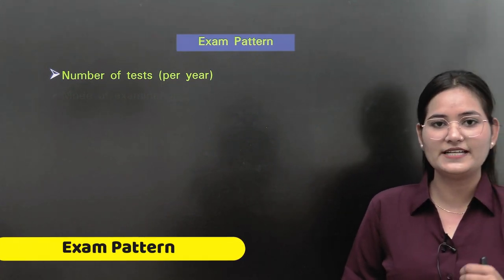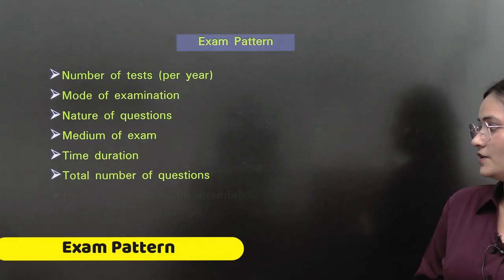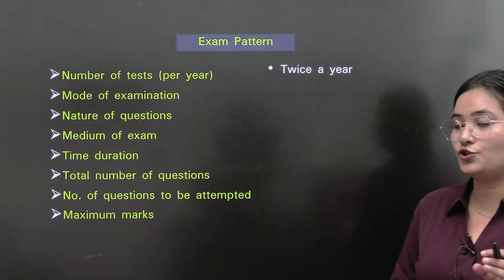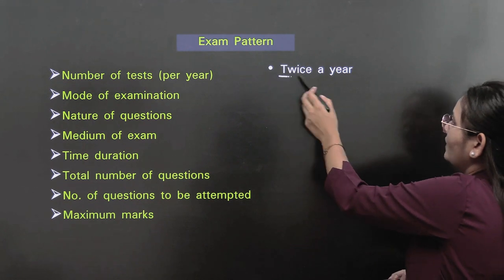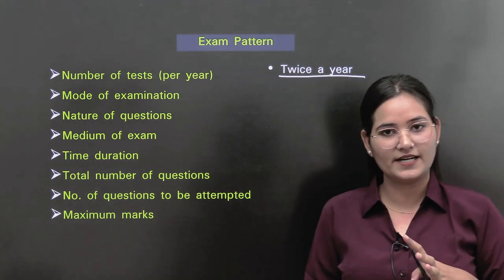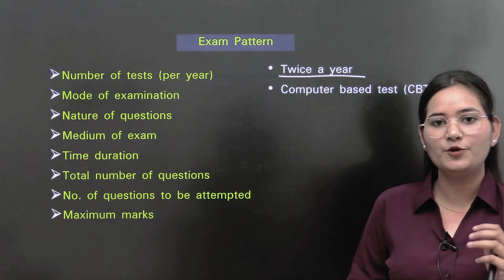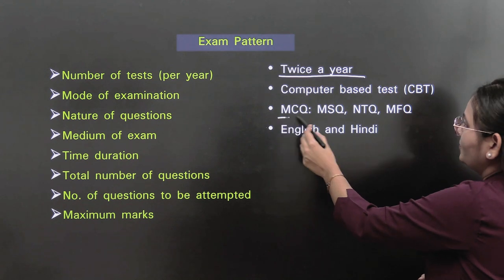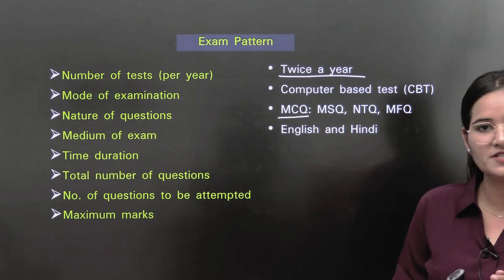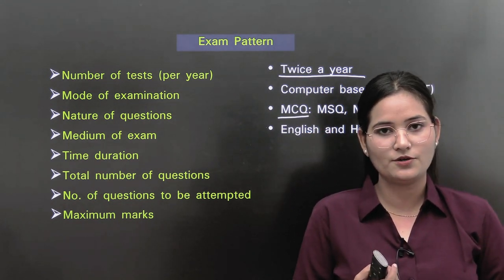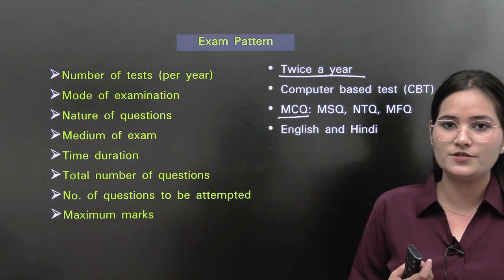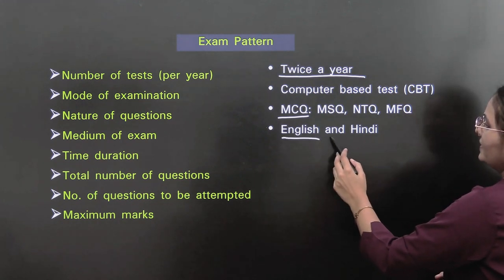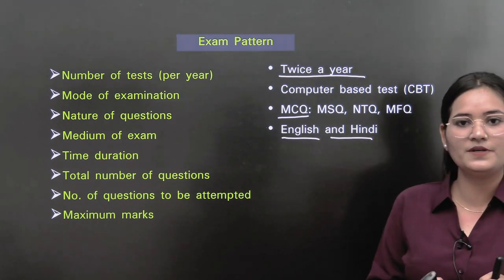Now talking about exam pattern. The CSIR examination is conducted twice a year, meaning at an interval of every 6 months. It is a computer-based examination. The nature of questions is MCQ — including multiple statement questions, numerical type questions, and match-the-following questions. The medium of exam is both Hindi and English.